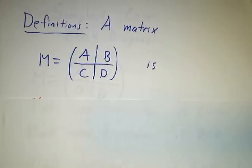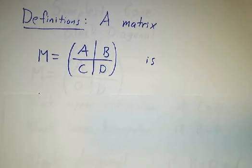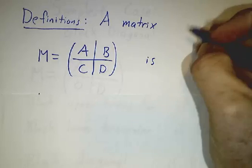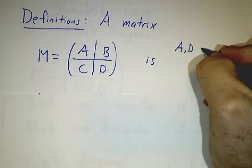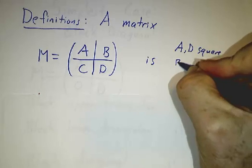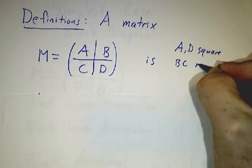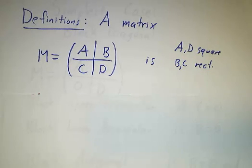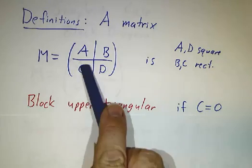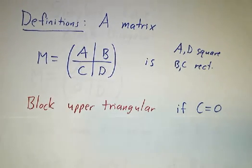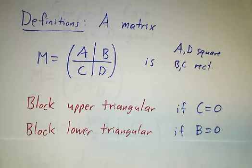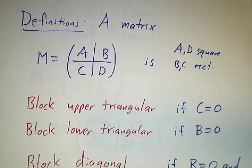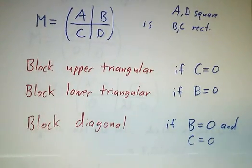In general, we're going to look at partition matrices. We want a partition matrix where A and D are square and B and C can be rectangular. It's block upper triangular if C is zero — if A, B, and D are the only things that contribute. It's block lower triangular if B is zero — if A, C, and D are the only things that contribute. And it's block diagonal if B is zero and C is zero.